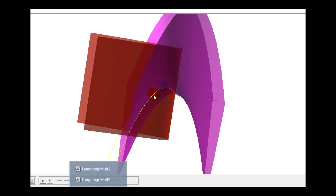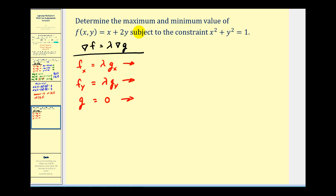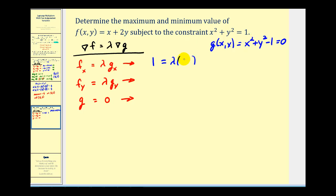Let's take a look at another example that's a bit more involved, where we determine the max and min values of this function based upon the given constraint. We let g(x, y) = x² + y² − 1 = 0. We set the gradient of f equal to lambda times the gradient of g, resulting in two equations. The partial derivative of f with respect to x is 1, equal to lambda times 2x. The partial of f with respect to y is 2, equal to lambda times 2y. And lastly we have our constraint.